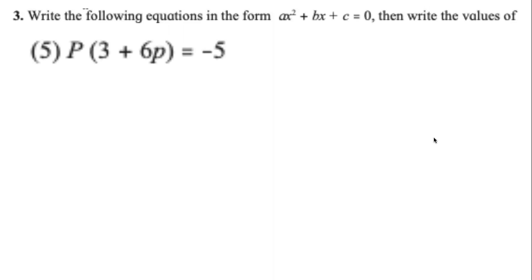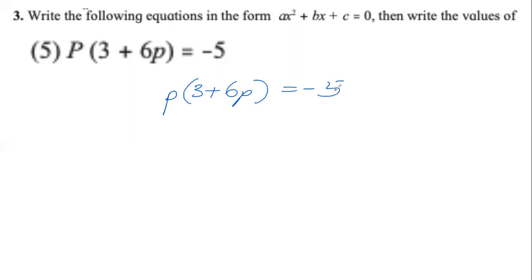First, in question number 3, part 5: the question asked us to write equations in the form ax² + bx + c = 0, convert to general form, and write the values of a, b, and c. There is a printing mistake — in the textbook and PDF I have, it says capital P into (3 + 6p). It cannot be capital P; it is small p. The correct question should read: p(3 + 6p) = −5.